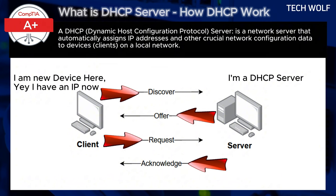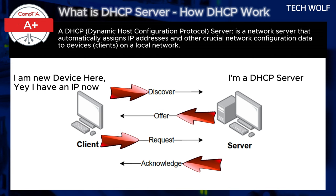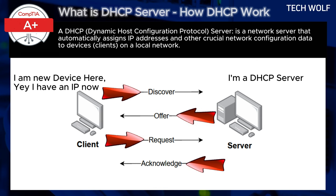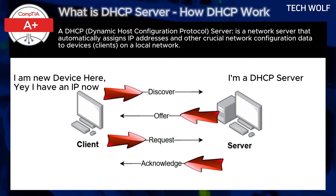In this step, the DHCP server sends a DHCP ACK message to confirm the IP address assignment and other network details. The client now has the IP address, can configure itself, and joins the network with full connectivity. Before the lease expires, the client will automatically send a request to renew its IP address, ensuring that it retains the same IP as long as it remains on the network.